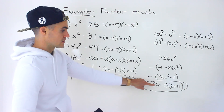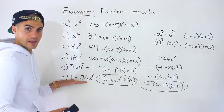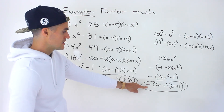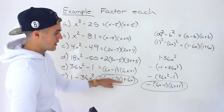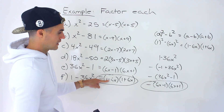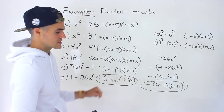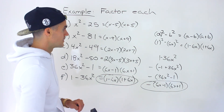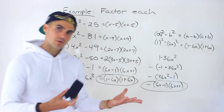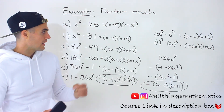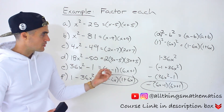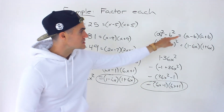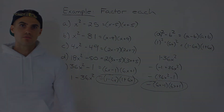If you expand either form, you'd still end up with the same expression, so neither is incorrect. Sometimes you'll see solutions given one way or the other. The key steps are: always check for a greatest common factor first, then rewrite the expression in the a squared minus b squared format, identify the a and b values, and plug them into the formula.